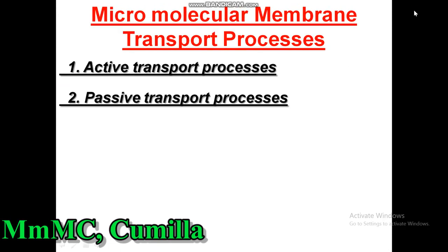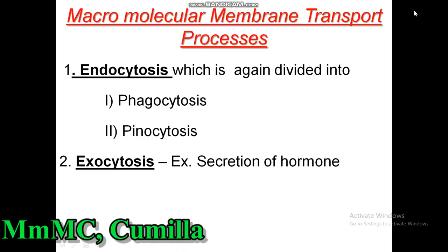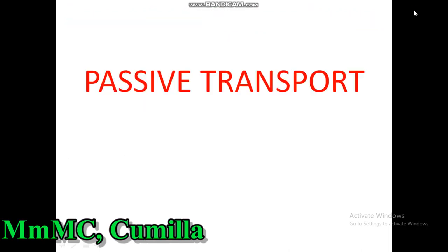The micromolecular membrane transport process consists of active transport and passive transport. Active transport is again subdivided into primary active transport and secondary active transport, which consists of co-transport and counter-transport. Passive transport is divided into osmosis and diffusion, and diffusion is again divided into simple diffusion and facilitated diffusion. Macromolecular membrane transport is also divided into two parts: endocytosis and exocytosis. Endocytosis is again divided into phagocytosis and pinocytosis.